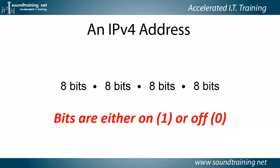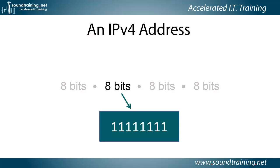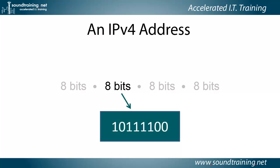Bits exist in one of two states: they're either on, in which case they're represented by a 1, or off, in which case they're represented by a 0. It could be all 1s, all 0s, or a combination of 1s and 0s.